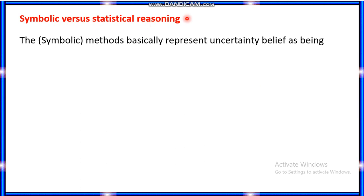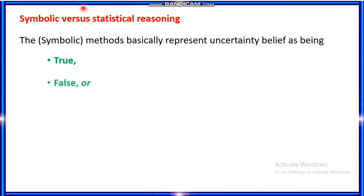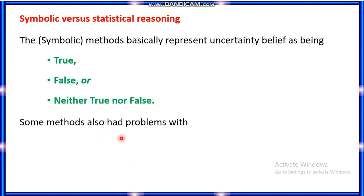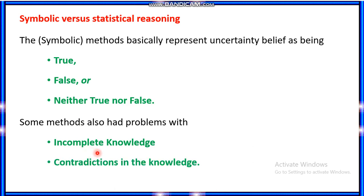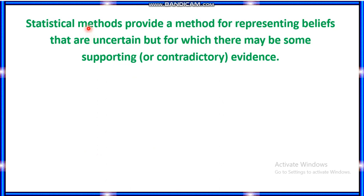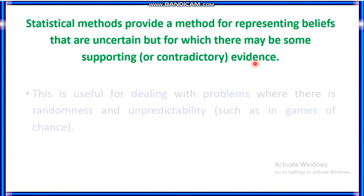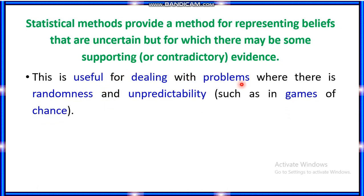There are two types: symbolic versus statistical reasoning. Symbolic methods basically represent the uncertainty belief as being true, false, or neither true nor false. Some methods also have problems with incomplete knowledge and contradictions in the knowledge. Statistical methods provide a method for representing beliefs that are uncertain but for which there may be some supporting or contradictory evidence. This is useful for dealing with problems where there is randomness and unpredictability.